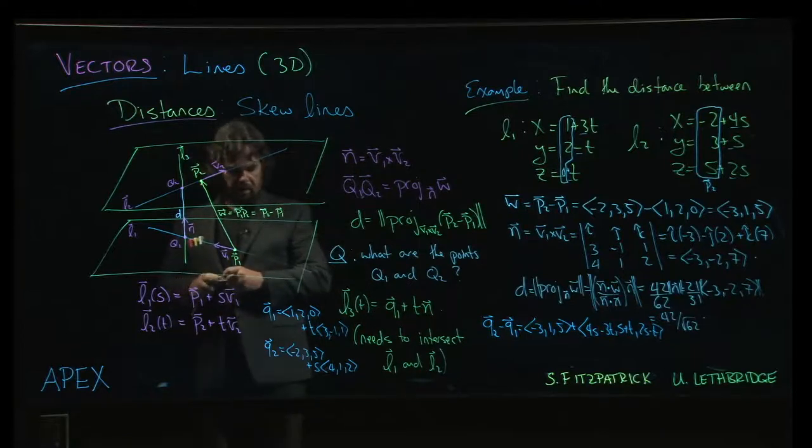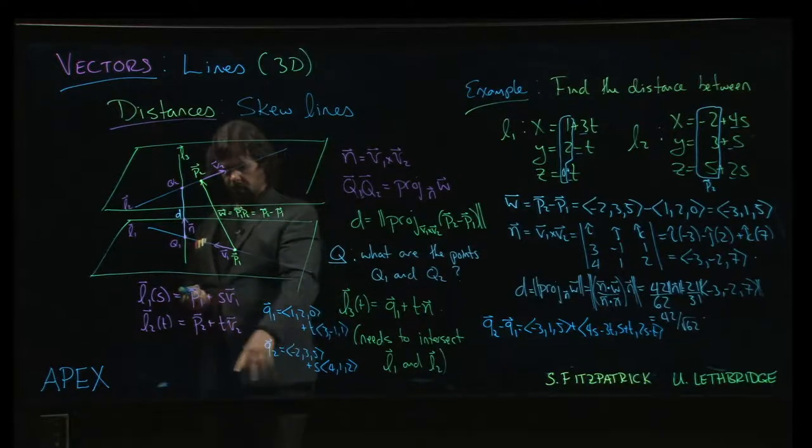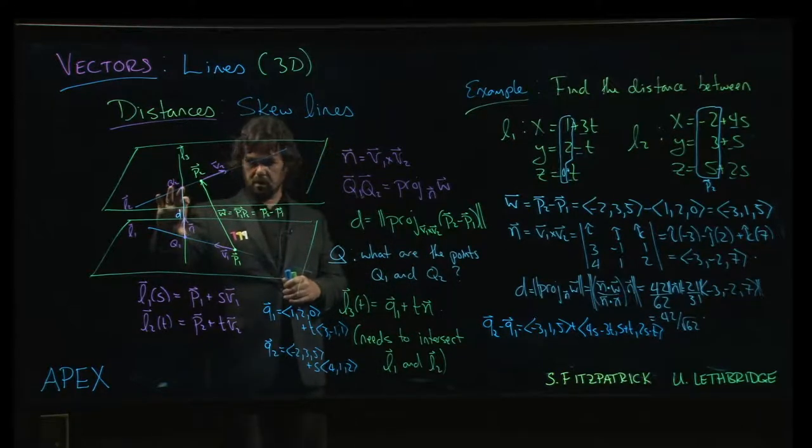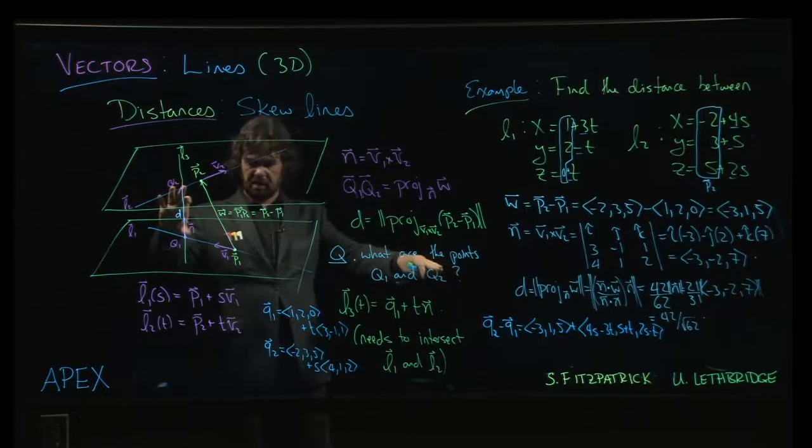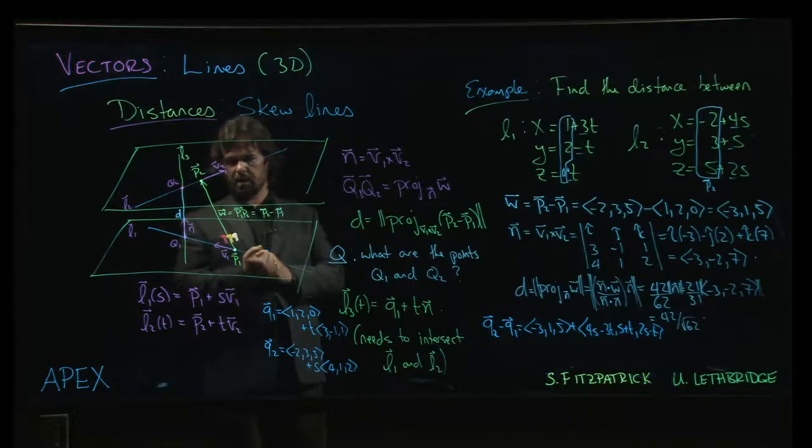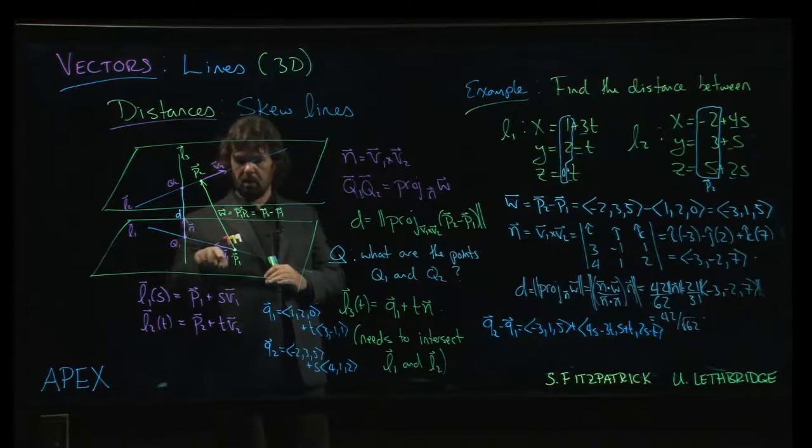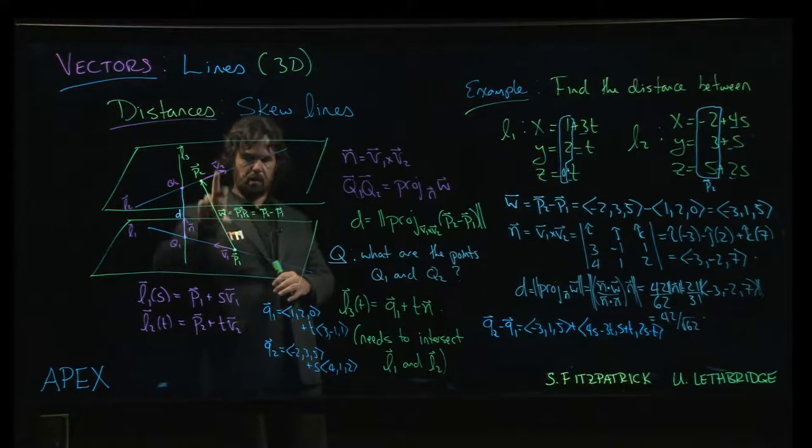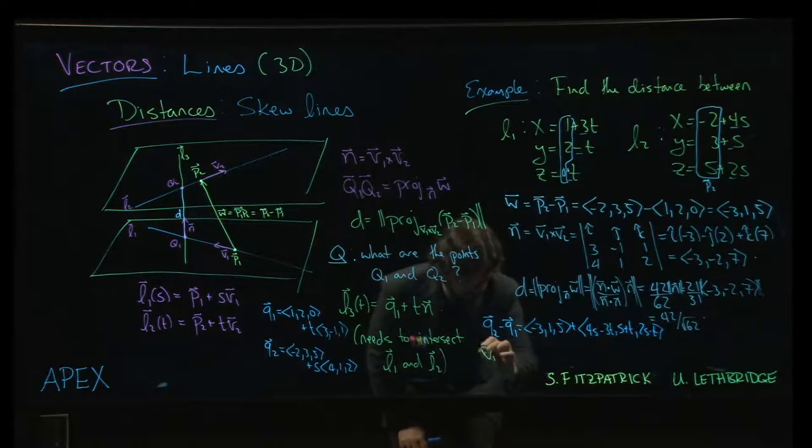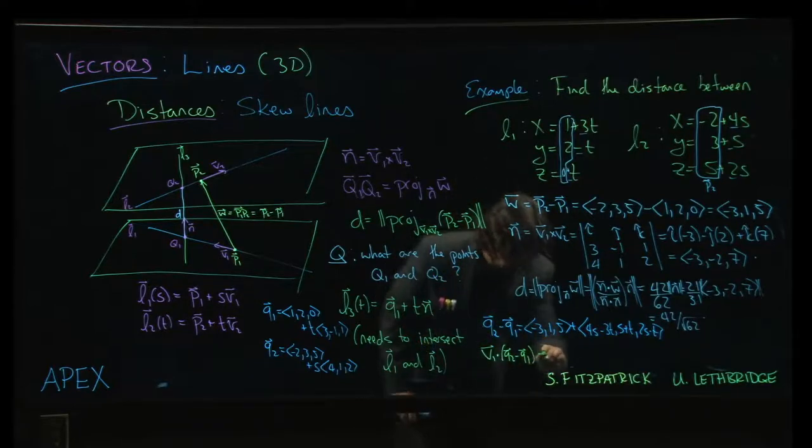So we know that q1 is on L1, so it has to look like that for some t. q2 is on L2, so it has to look like that for some s. So this vector has to look like that for some values of s and t. And we also know that it has to be parallel to the normal vector. So in particular, it has to be orthogonal to the two vectors, v1 and v2. And so what we do is we say, v1 dotted with q2 minus q1 would have to be equal to 0.